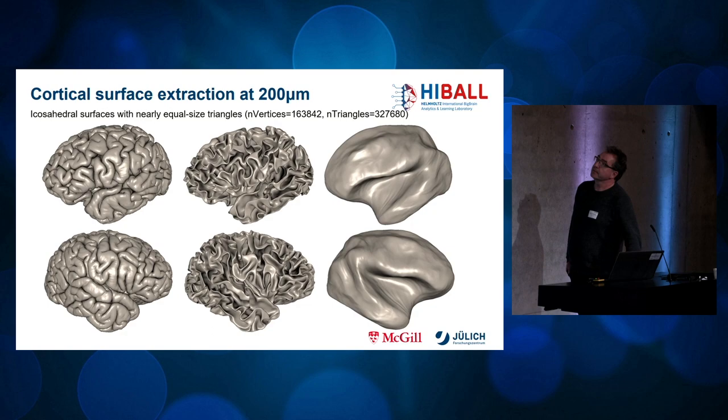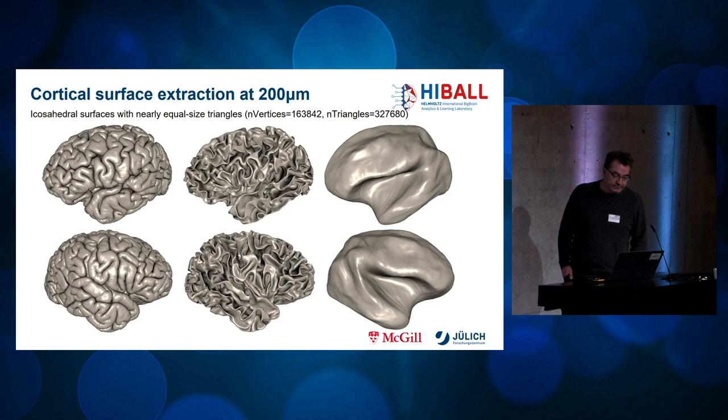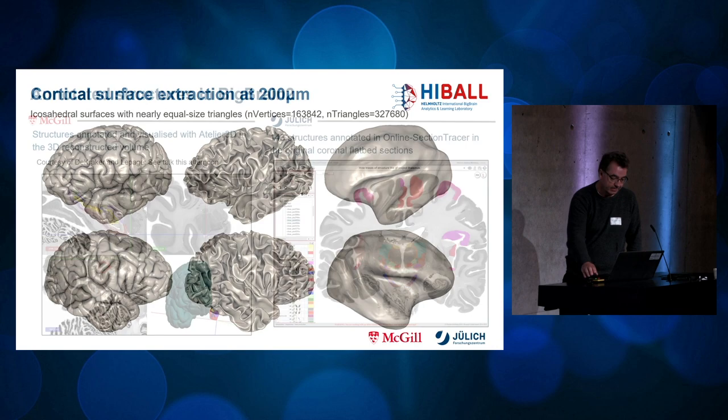With this dataset, you can compute cortical surface models with an adapted version of CIVET. From left to right, a smooth white matter surface and an inflated surface were computed with an identical number of vertices and triangles for each side. In addition, a spherical representation was computed, which is necessary to compute transformations with MSM, for instance.